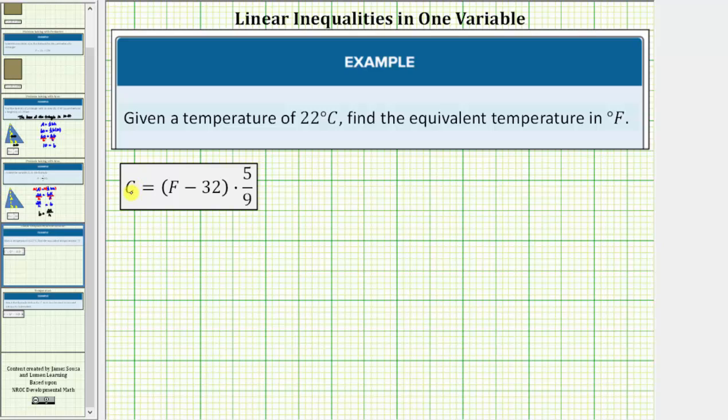In the given formula, C is the temperature in Celsius and F is the temperature in Fahrenheit. So to answer this question, we'll substitute 22 for C and solve the equation for F.